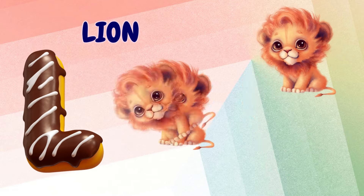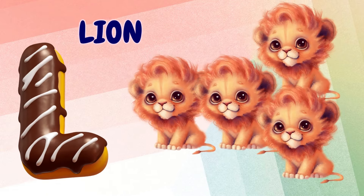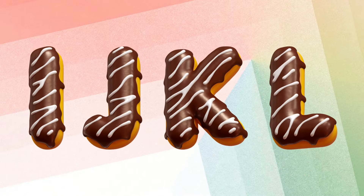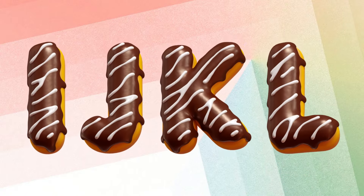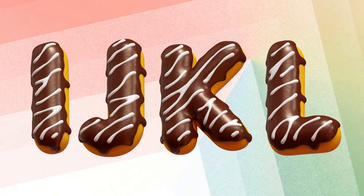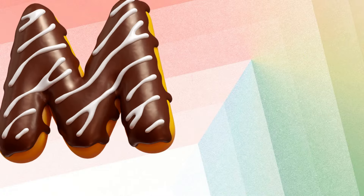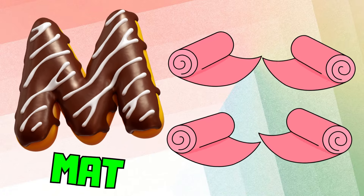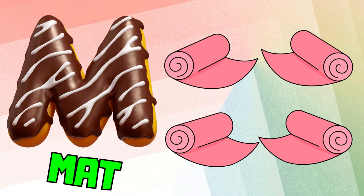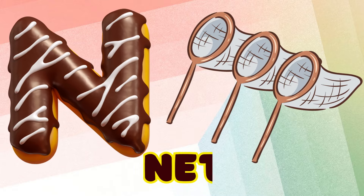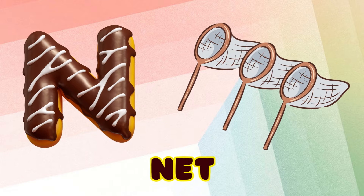L is for lion, l-l-lion. M is for mat, m-m-mat. N is for net, n-n-net.